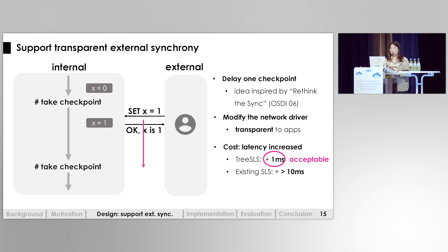To support transparent external synchrony, we delay all responses by one checkpoint interval so the response is only visible after it is truly persisted by our checkpoint. This idea is inspired by the Rio-Sync approach, and we implemented it by modifying the network driver so it is transparent to applications. However, this method increases latency, which is why existing single-level stores avoid such methods due to high checkpoint costs. But the performance cost is acceptable with our high-frequency checkpoints, as we will show in the evaluation.